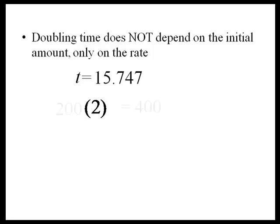If we change the initial amount, we'll just keep multiplying it by 2, and we get double whatever our initial is.